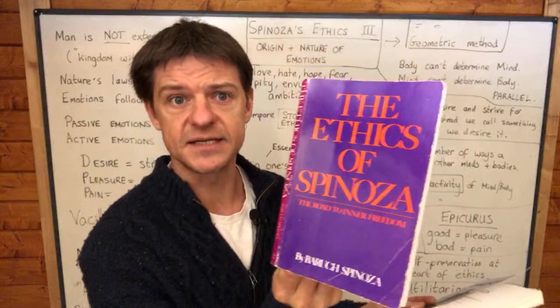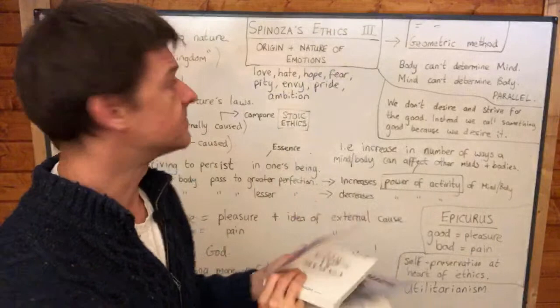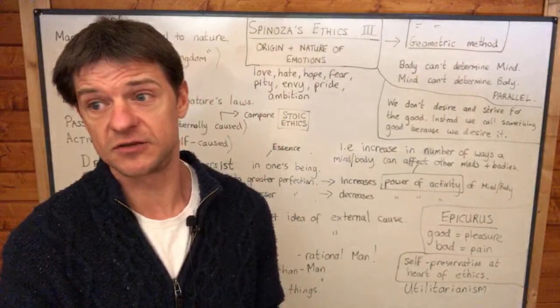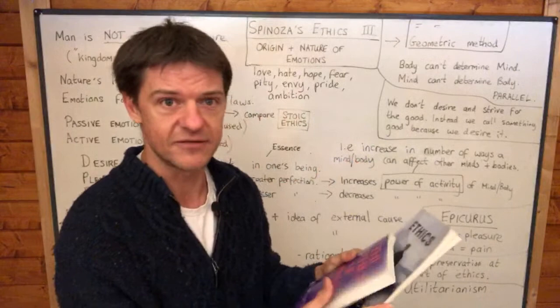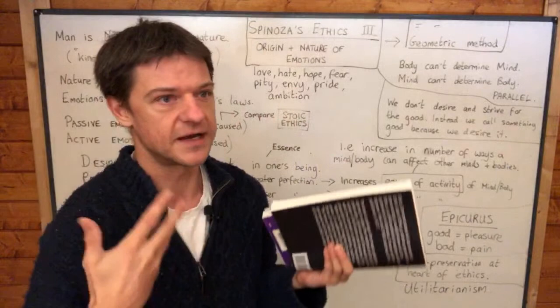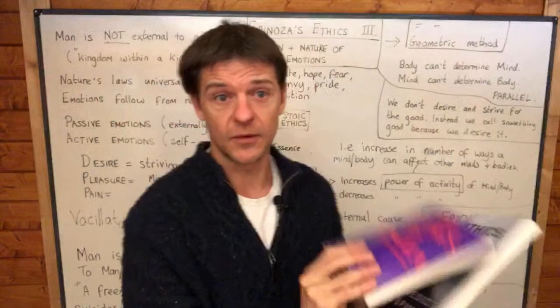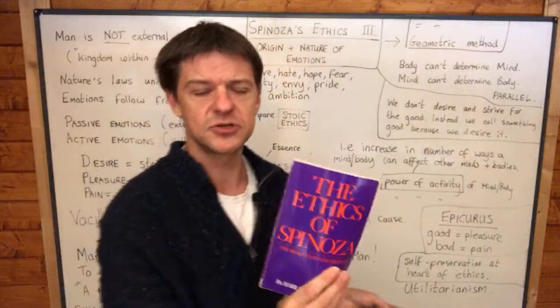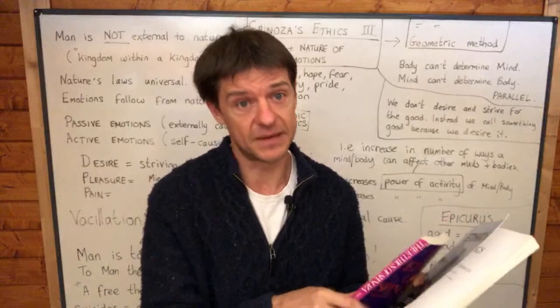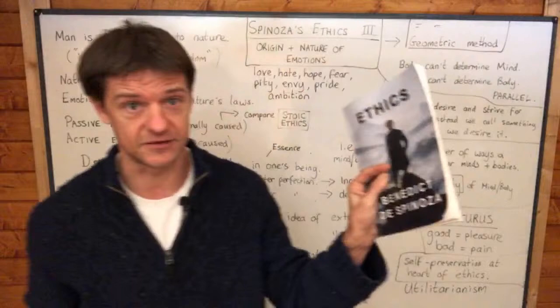Remember that Spinoza uses something he calls the geometric method. What he means is he's using a very similar method to Euclid in the way that he sets out his arguments. There are a lot of propositions and corollaries and proofs, so he's trying to use the same method as Euclid. That means the original is rather hard to read, but it becomes much easier if you've read it like this first. So I do recommend The Runes Version of The Ethics of Spinoza. It does capture the spirit of Spinoza and is perhaps a better book to start with.